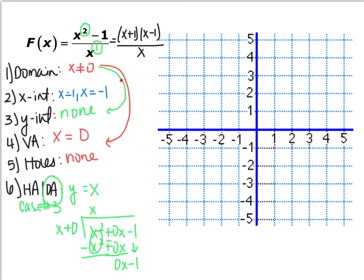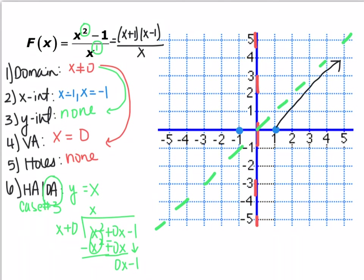Now graph what we know. Graph the oblique asymptote y equals x as a dotted line. We have x-intercepts at plus and minus 1, a vertical asymptote at x equals 0, and an oblique asymptote at y equals x. The function cannot be on both sides of a vertical asymptote on the same side. Because we have a point at x equals 1, we know which region the curve is in, and then we follow the asymptotes through x equals negative 1 on the other side.